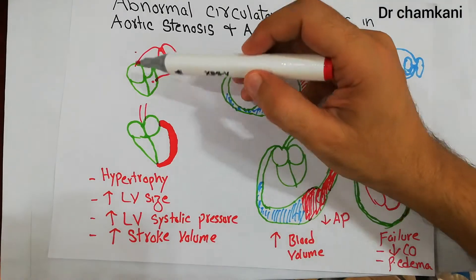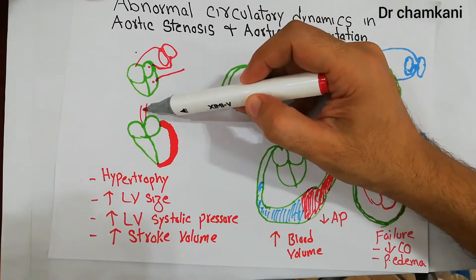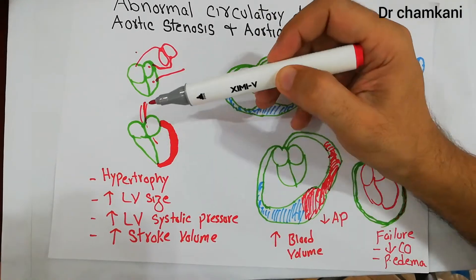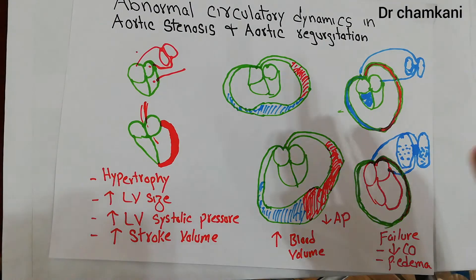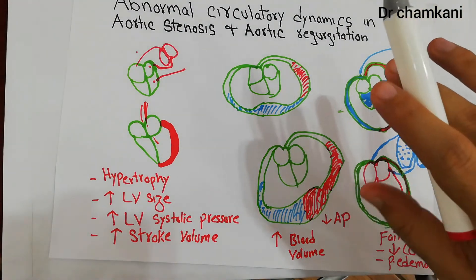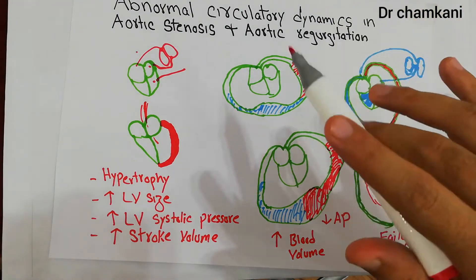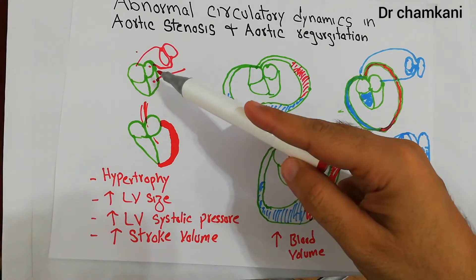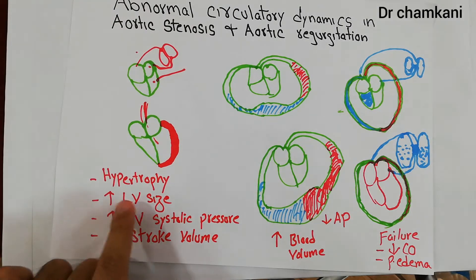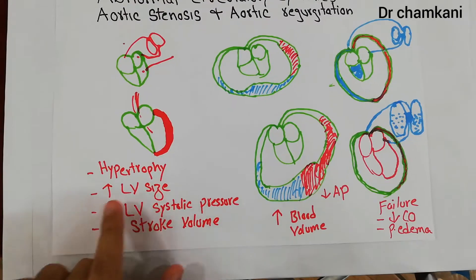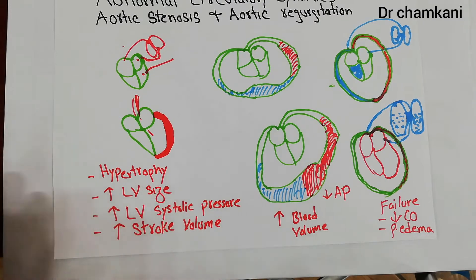In regurgitation, the aortic valve is incompetent and blood pumped into the aorta returns back into the left ventricle. The amount of blood the left ventricle must pump in such a condition is very high, and as a result there is an increase in the size of the left ventricle.